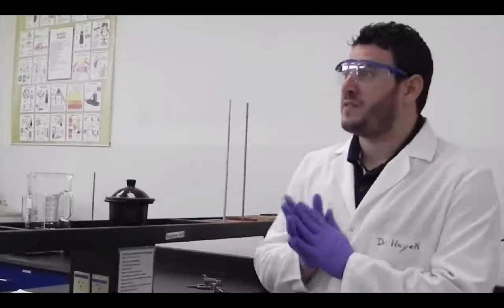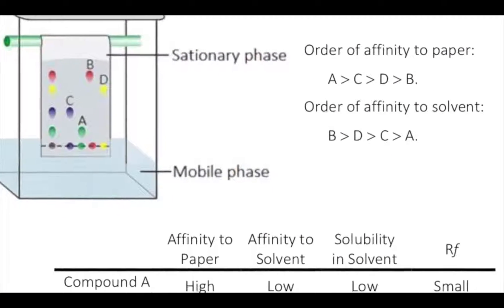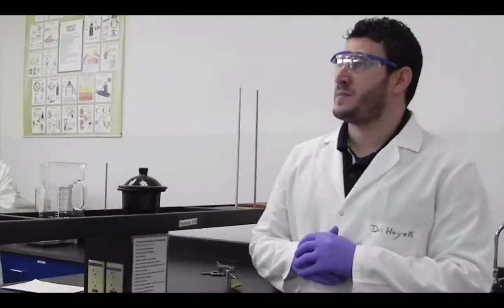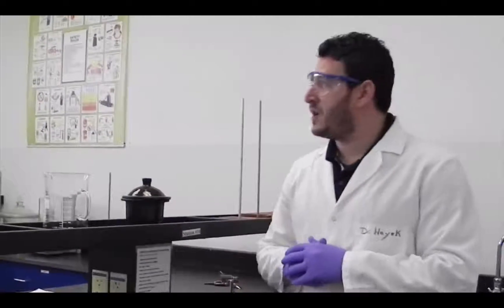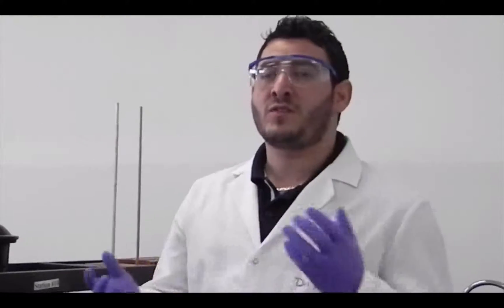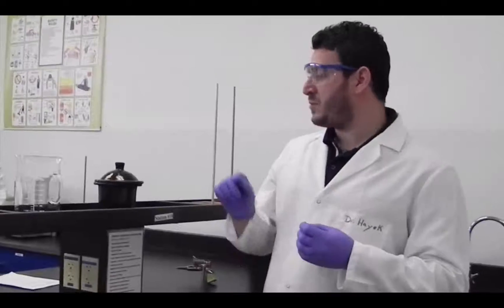Today's experiment is about chromatography paper. You have seen this in chapter one, where we talked about affinity to the solvent and affinity to the paper. Today you will be given a mixture of different compounds and four to five solvents, and you will study the migration of this mixture on the paper based on the polarity and structure of the solvent. What changes from one solvent to another is the type of interaction that the solvent carries with the paper and with the mixture.